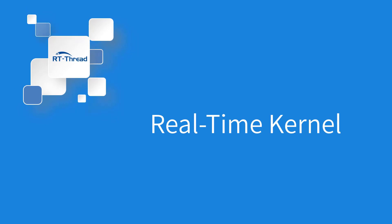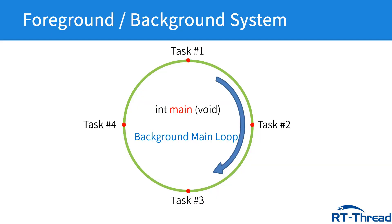First things, let's start with the real-time kernel. To better understand RTThread, we'd better get to know what the real-time kernel is and why it is needed. If we haven't used a real-time kernel yet, we often use the foreground-background system model, which means we put all the tasks in the main function and every task will run in order.